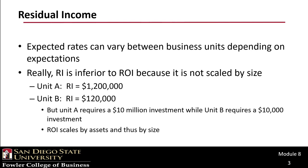Residual income allows expected rates to vary between business units depending on expectations. But in some respects, residual income is inferior to return on investment because it's not scaled by size. For example, Unit A may have residual income of $1.2 million and Unit B may have residual income of $120,000. But if Unit A requires a $10 million investment while Unit B requires a $10,000 investment, the difference largely has to do with size. Return on investment scales by assets — specifically, the denominator for ROI is average assets.